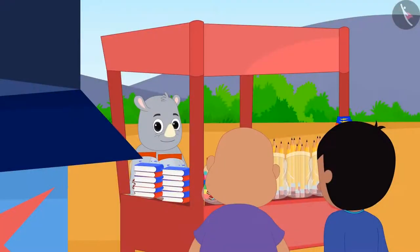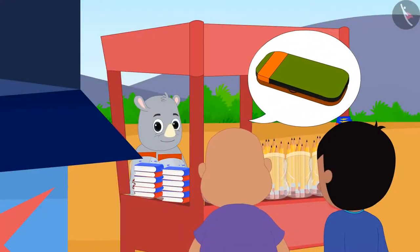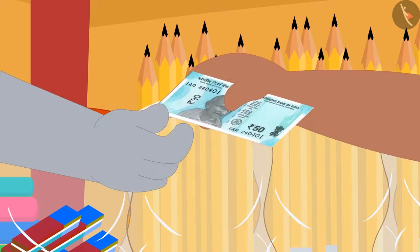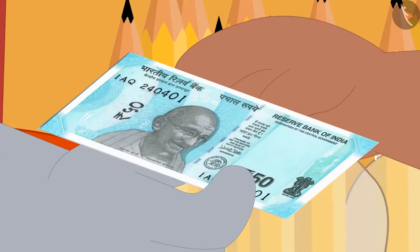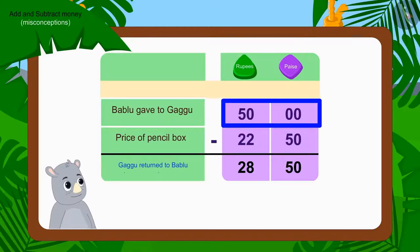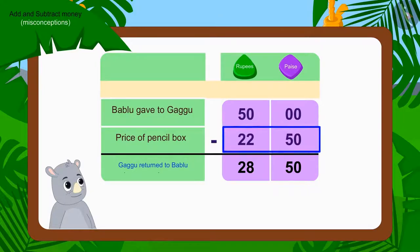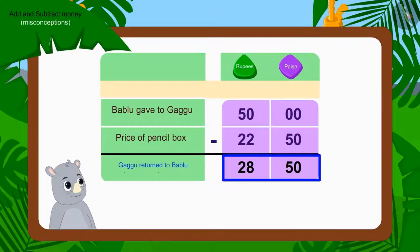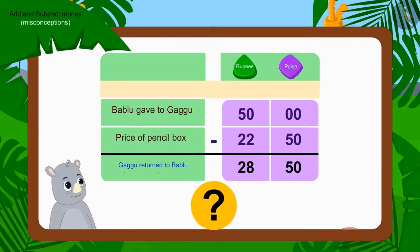Now Bablu asked for one pencil box from Gaggu and gave a 50 rupee note. In this way, Gaggu deducted 22 rupees 50 paise of the pencil box from 50 rupees and returned 28 rupees 50 paise. Children, has Gaggu returned the right amount to Bablu?